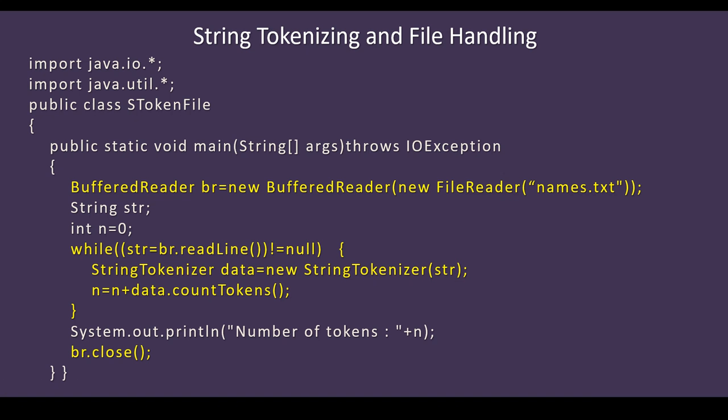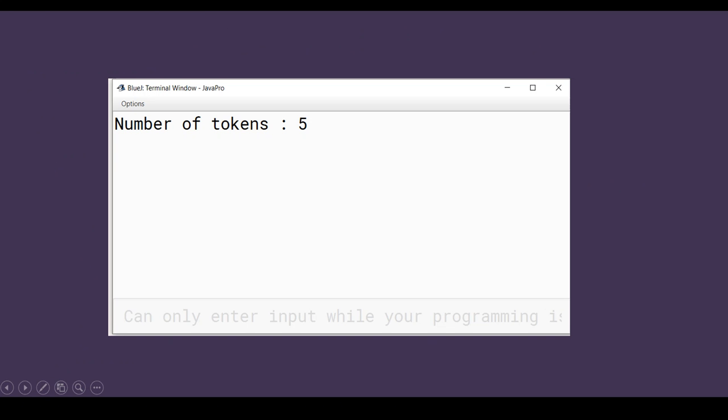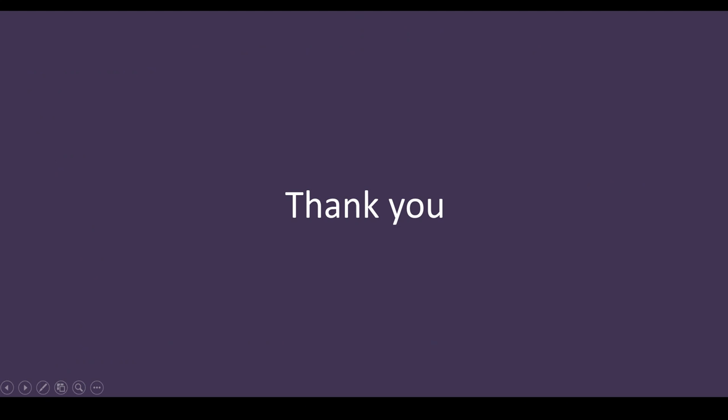After the while loop executes, you display the number of tokens with System.out.println("Number of tokens is " + n), which shows the total number of tokens from the complete file. Then br.close() closes the BufferedReader object. When you execute the program, if the file names.txt has 5 words — 5 names — the output will be: Number of tokens is 5. Hope you understood this video. You now know how to use string tokenization to read data from a file and do manipulation. We will meet you in the next video. Thank you.